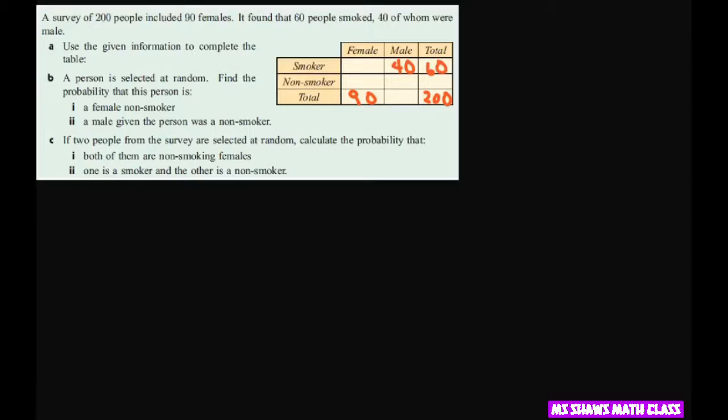So now when you're adding across, this has to be 20. You're adding vertically, that's 70. This has to be 110. This is going to have to be 140. And this has to be 70 because you're adding your totals here.